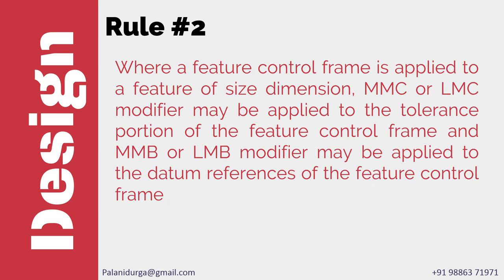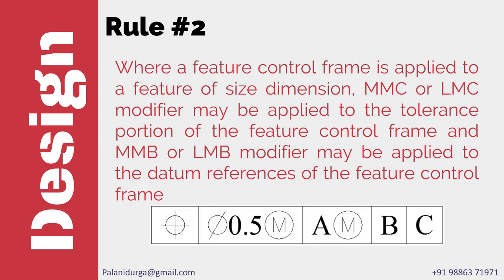Wherever it is necessary, we can use maximum material condition modifier or least material condition modifier in the geometrical tolerance value, provided the feature control frame is applied to the feature of size. Maximum material boundary or least material boundary modifier may be applied to the datum reference of the feature control frame. Here we have an example of maximum material condition applied to a tolerance and maximum material boundary applied to a datum reference. Similarly, we have least material condition applied to a tolerance and least material boundary applied to a datum.